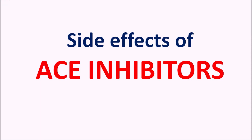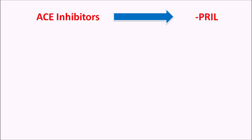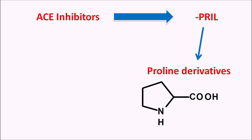Today in this video we are going to discuss the side effects of ACE inhibitors. ACE inhibitors are the angiotensin converting enzyme inhibitors, well known by their suffix PRIL. PRIL indicates that these drugs contain proline residues. The proline structure is incorporated into ACE inhibitors and modified in several ways to produce various types of ACE inhibitors, all ending with the suffix PRIL.